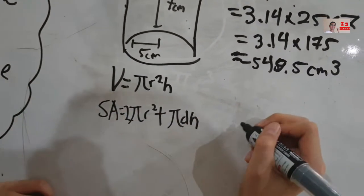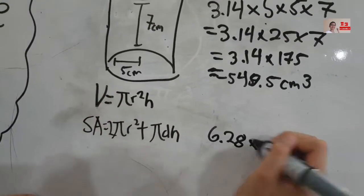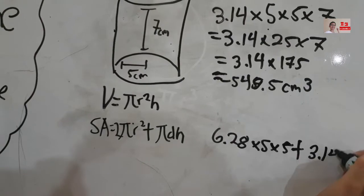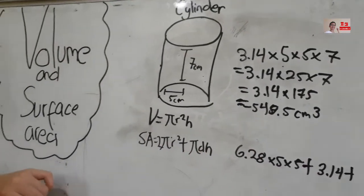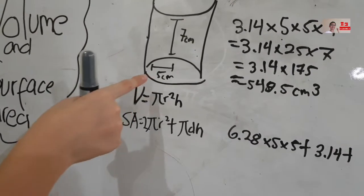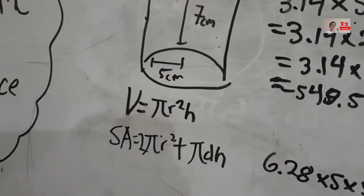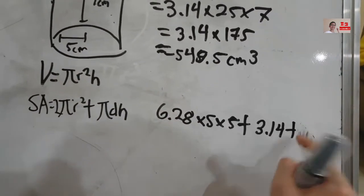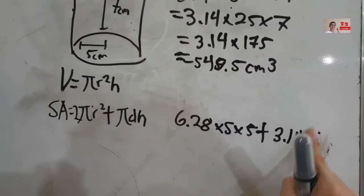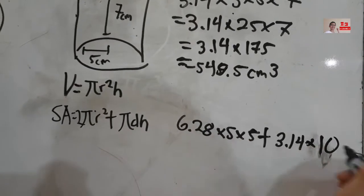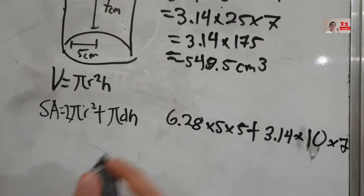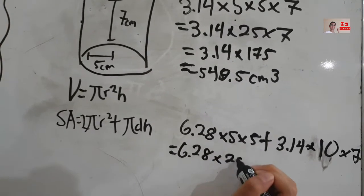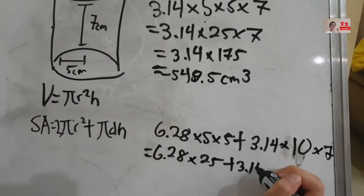So, 2 times 3.14 equals 6.28, and then times the radius, 5. So that's 5 times 5, plus 3.14 times the diameter. How do we find the diameter? It is 5 plus 5, so it is 2 times the radius, which equals 10. So: 2 times 10 times 7, and then 6.28 times 25 plus 3.14 times 17.